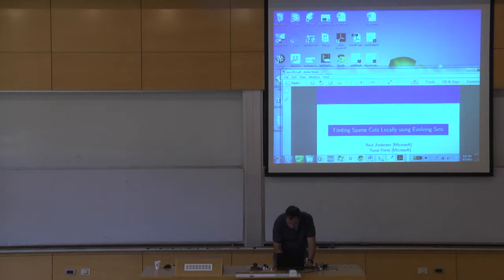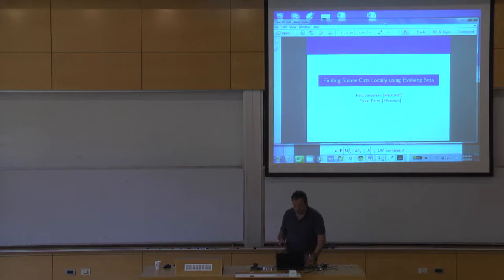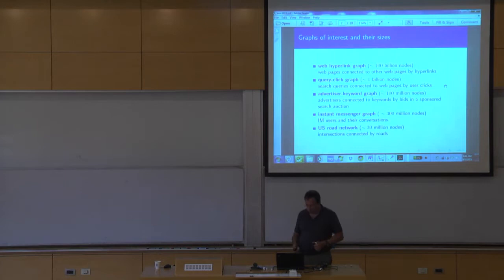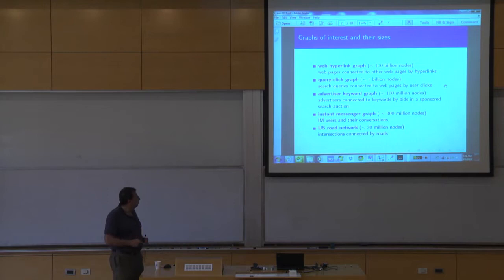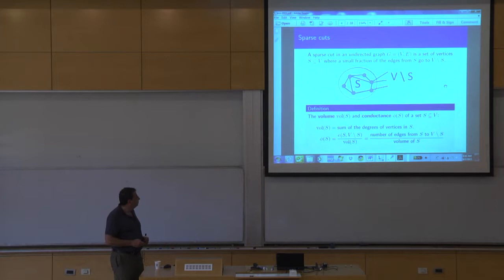I want to describe it from this perspective. The way I arrived at it is first from the Markov chain application, and then from this kind of finding sparse cuts application, but I'll tell it now in the other order. This is an applied problem — there are various real-world graphs where we want to find this kind of community.